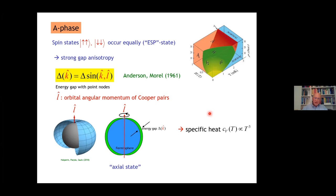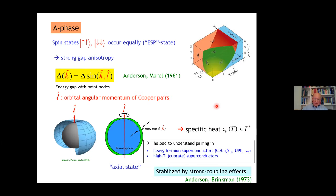This was something completely new at that time. Because of this node, the specific heat vanishes much less fast, with an algebraic law. This was incredibly helpful to understand the pairing in the heavy fermion superconductors discovered in the end of the 70s, and then the high T_C cuprates in 86. The A phase is stabilized by strong coupling effects.